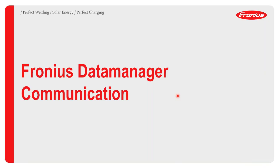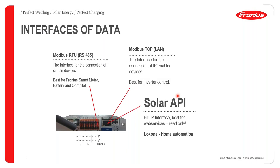Now let's look at how the Data Manager communicates via its communication interfaces. For the Modbus RTU, this interface is used for the connection of simple devices — it is best used for connection of the Fronius Smart Meter, battery, and ohm pilot.